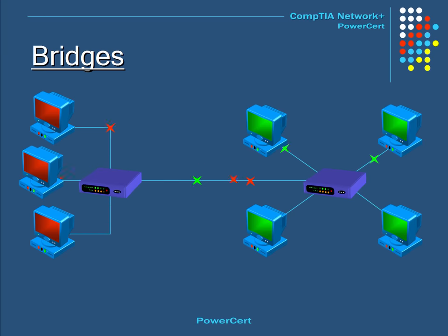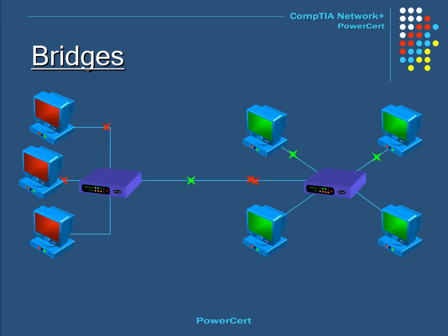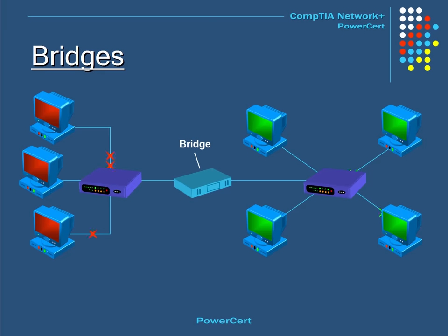Bridges are used to divide a network into separate collision domains. For example, a network segmented into two by a couple of hubs will have broadcast traffic from both segments seen by all computers, causing unnecessary traffic. Adding a bridge reduces this unnecessary traffic by filtering data based on MAC address. The bridge only allows data to cross over if it meets the required MAC address of the destination, since it keeps a record of all MAC addresses of the NICs connected to it.